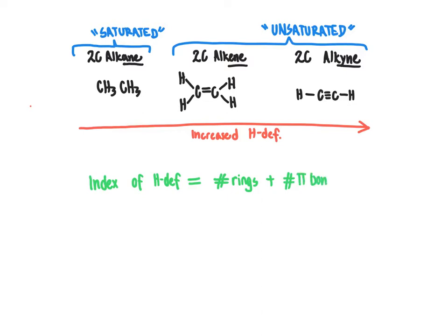An alkene molecule with just one alkene group has one pi bond, and an alkyne has two pi bonds. We can use the index of hydrogen deficiency to determine how many rings and how many pi bonds there have to be in a molecule. Every time we insert a ring or implement a pi bond, that reduces the number of hydrogens that can possibly go into the molecule.